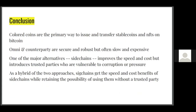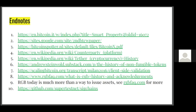In conclusion: colored coins are the primary way to issue and transfer stablecoins and NFTs on Bitcoin. Omni and Counterparty are the most secure and robust options currently available, but they are slow and expensive. Sidechains are faster and cheaper but require trusted third parties — a federation that could become corrupt or be pressured to shut down. Sigchain is a hybrid: use it like Omni or Counterparty for security, or use the sidechain path for speed; if the sidechain ever fails, fall back to the on-chain method.